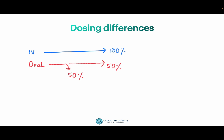It's also important to note that the percentage of drug metabolized by the liver will change based on liver function. Any changes in liver function — either acute or chronic — can affect the extent of first pass metabolism. Additionally, competition from other drugs could result in drug interactions.